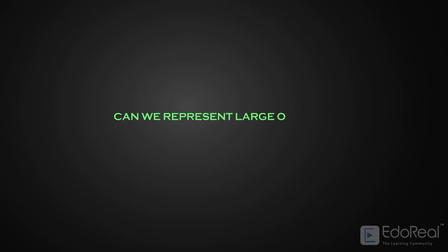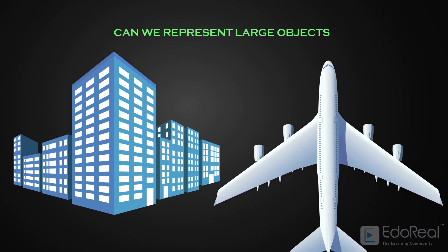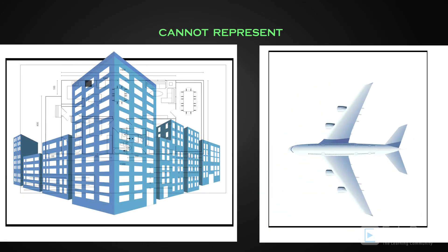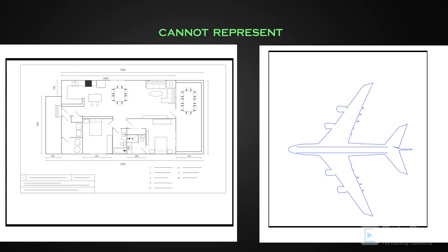Can we represent large objects like a building, an aeroplane, with actual size? The answer is no, right? We can't represent large objects on paper with their actual sizes. We need to reduce the actual size to represent them on paper.